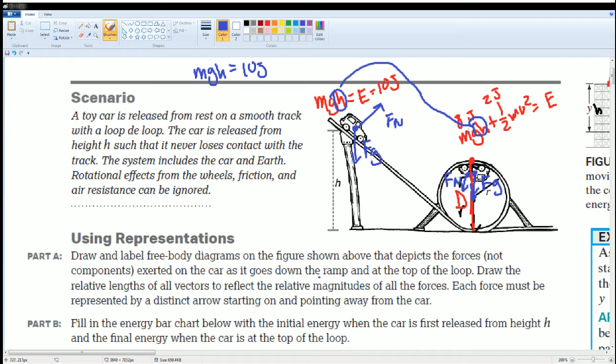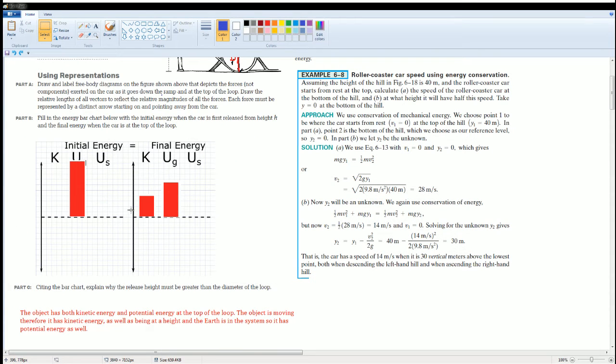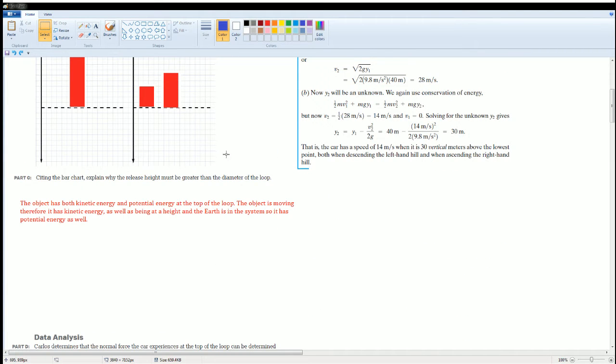So watch this. mgh equals to 10 joules of energy and here it's mgh equals to 8 joules of energy. mg are all the same. mg is the same. So the height here has to be 10 meters. I'm just making up some units. Here, the height here has to be 8 meters. Do you see? There's no way for, in the loop, for the height, the height to be greater than. It actually has to be less than. And remember, the height here is defined by the diameter. So that's just a rough explanation. Now I'm just going to give you the academic answer. The object both has kinetic and potential energy at the top of the loop. The object is moving. Therefore, it has kinetic energy as well as being at a height. Notice that height is equal to the diameter in the loop. And the earth is part of the system, so it also has potential energy as well. If the height wasn't greater than the diameter of the loop, the cart wouldn't make it around the hoop due to it not having enough kinetic energy being converted from the potential energy.